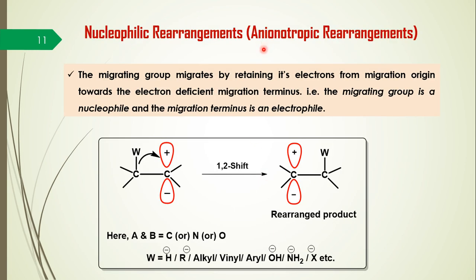In nucleophilic or anionotropic rearrangements, the migrating group migrates by retaining its electron pair from the migration origin towards an electron-deficient migration terminus. The migration terminus must be electron-deficient — making the migrating group a nucleophile and the migration terminus an electrophile. Migration origin and terminus may be carbon, nitrogen, or oxygen. The migrating group may be hydride, alkyl, aryl, vinyl, hydroxyl, amino, halo, or any such group. These are nucleophilic or anionotropic rearrangements.